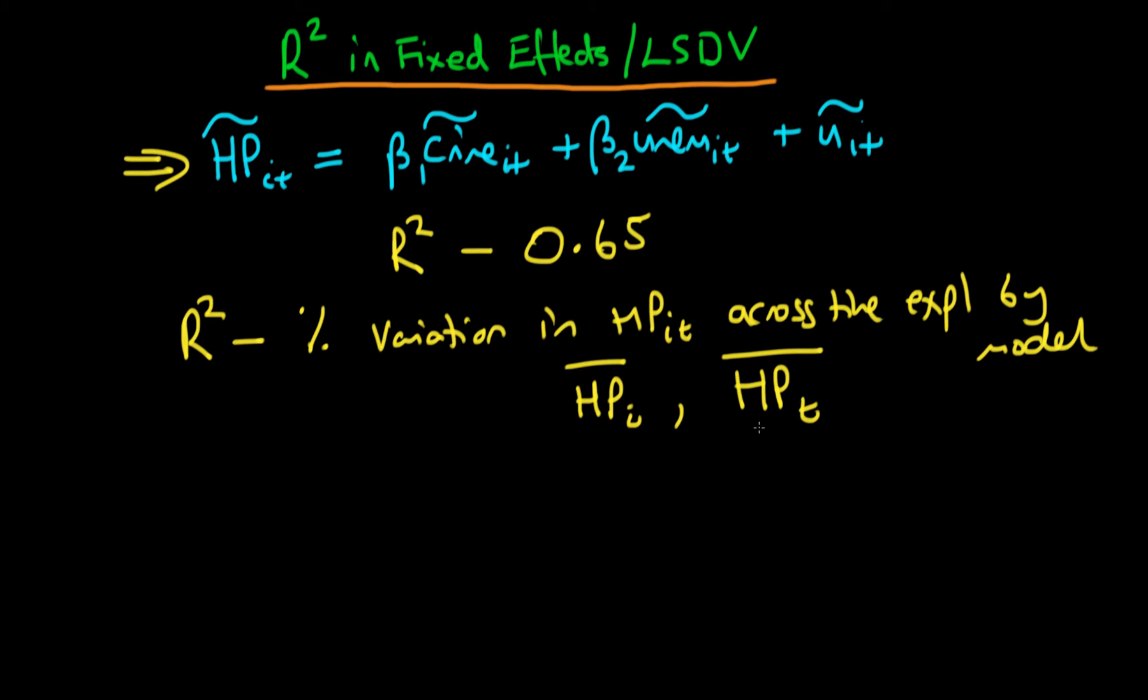So that might be another way of calculating the R squared. But it turns out that the R squared which we're generally most interested with is our ability to explain variation in house prices across time or away from their time mean.